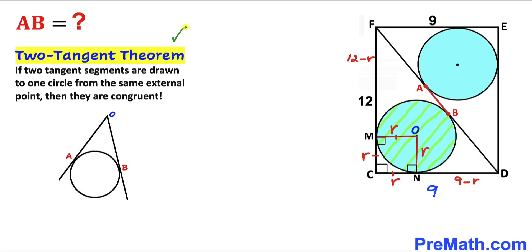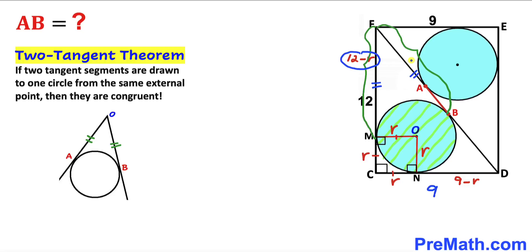Now let's recall the two tangent theorem: if two tangent segments are drawn to one circle from the same external point, then they are congruent. In our case, tangent FM is congruent to tangent FB. So if FM is 12 minus r, then FB is 12 minus r as well.